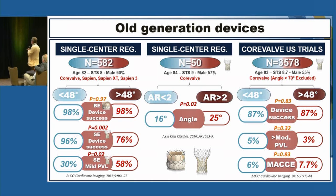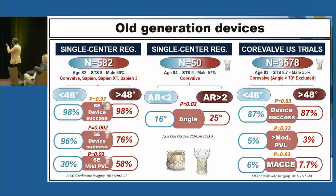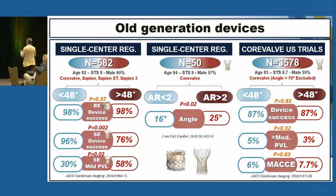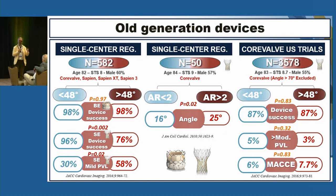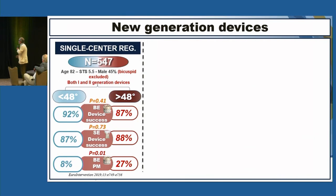There is a small study of 50 patients where the analysis looked at patients with more than moderate aortic regurgitation. What the authors found is that there is a significant interaction with the angle between the ventricle and the aorta — the more horizontal it is, the higher the rate of residual moderate aortic regurgitation. But let's go to more recent papers.